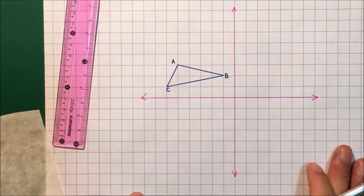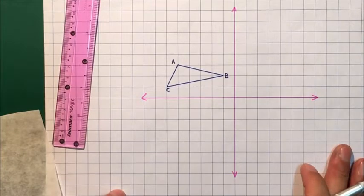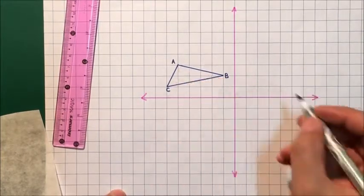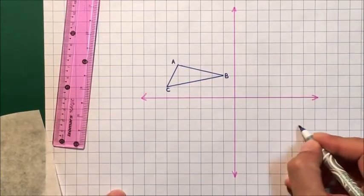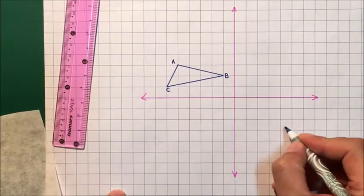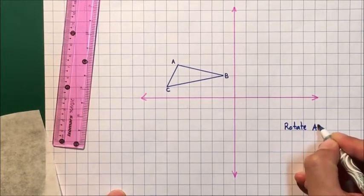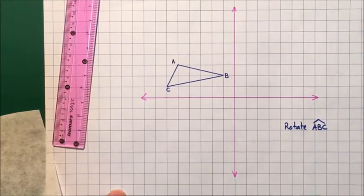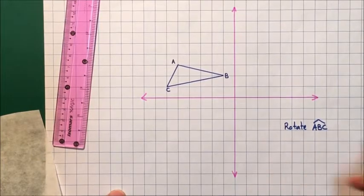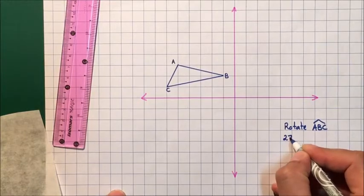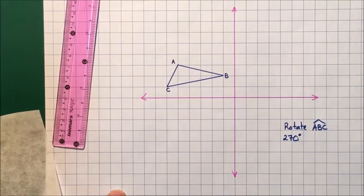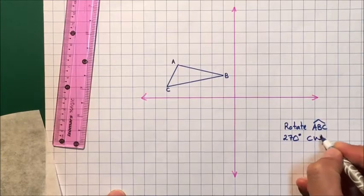For this problem, we're going to do a rotation. We're going to rotate triangle ABC. Let's write that down. We're going to rotate triangle ABC 270 degrees clockwise.